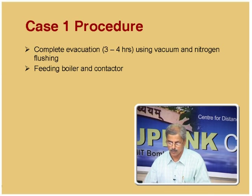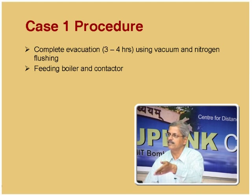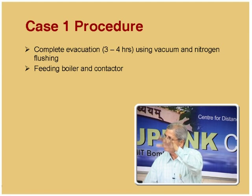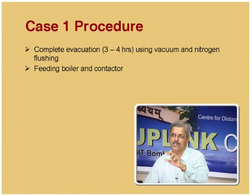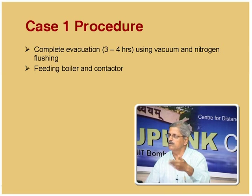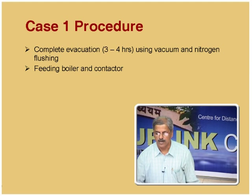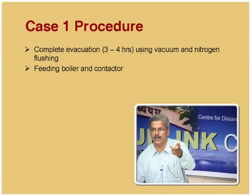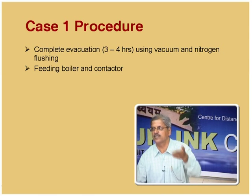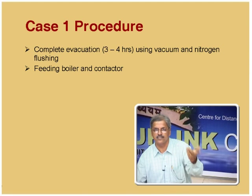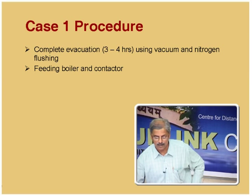You have to provide both the boiler and the contactor with liquid. Alternatively one can provide everything in the boiler and let vapor generate, go to the condenser, condense, and slowly build up in the contactor — but it is preferable to feed part of the liquid directly to the contactor to hasten equilibrium. You feed the boiler and contactor by ensuring the pressure inside is lower than what you will maintain for the run. If it is isobaric at one atmosphere, maintain around 700 mm Hg, and suck in the liquid to ensure nothing else gets in. Then boiling and condensing begins.